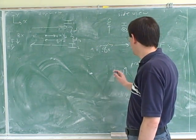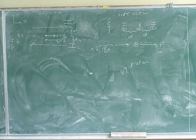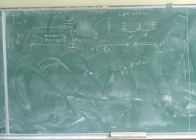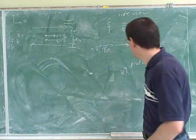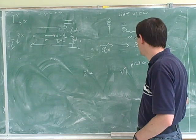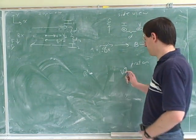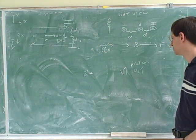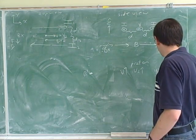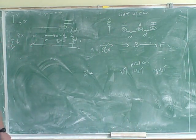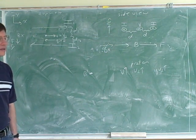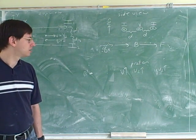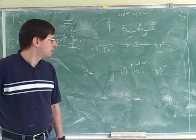So let's say we have a proton that is moving up and here's the magnetic field. Let's figure out the direction of the force on that proton. With fingers pointing up — QV perpendicular is also up — so fingers point up, my palm faces out of the blackboard, and my thumb is pointed to the right. So the force is in the positive x direction, to the right.